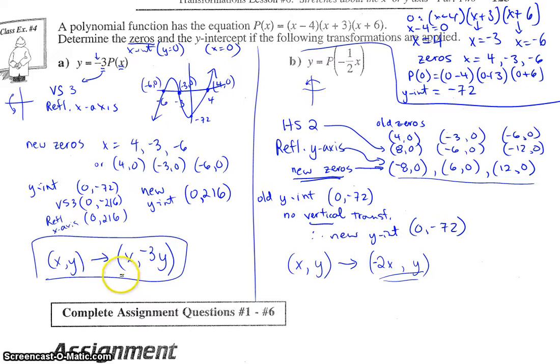So did everybody get that the point (x, y) changed to (x, -3y)? Nothing was done to the x because there were no horizontal transformations. But we stretched vertically by a factor of 3, so we'd multiply our y-coordinates by 3. And then we reflected in the x, so opposite sign. So that's why it's -3y.